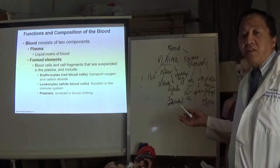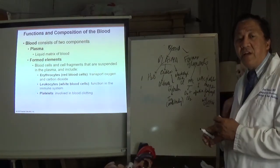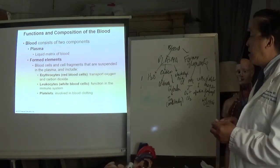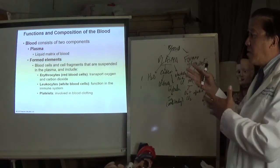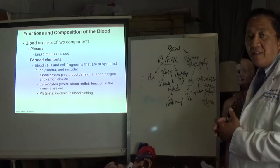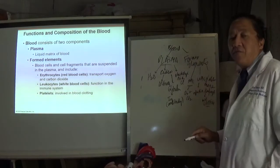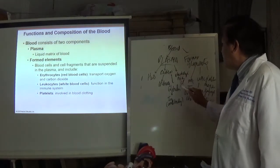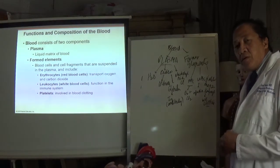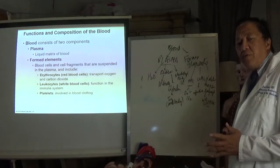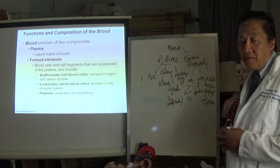What is shown here is a concept map, which tries to summarize the important words related to a particular topic. Blood is made up of two things — plasma and formed elements. Plasma is made up of water, proteins, and electrolytes. Formed elements consist of red blood cells, white blood cells, and platelets. The idea is to summarize and identify keywords and key ideas.